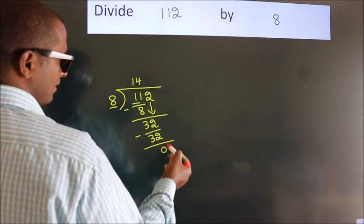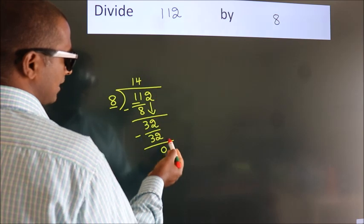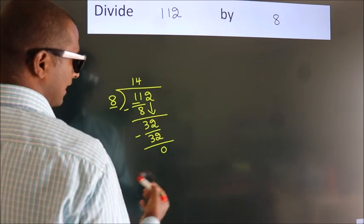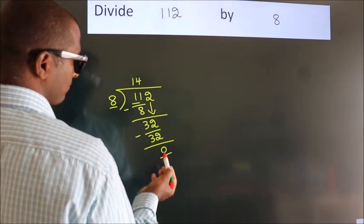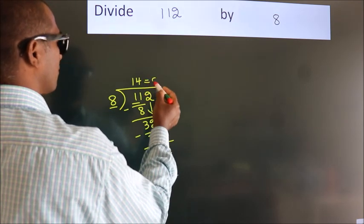After this, no more numbers to bring down and we got remainder 0. So this is our quotient.